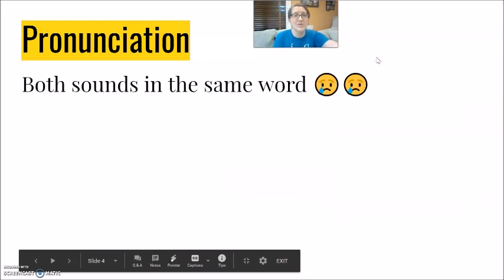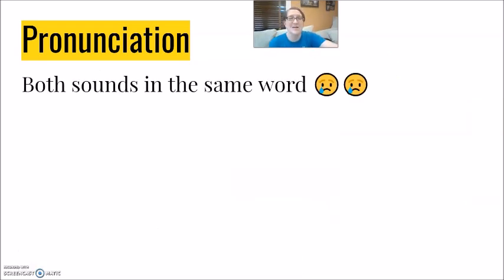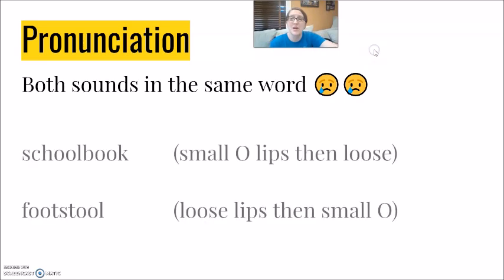It is possible to see both of these sounds in the same word, but don't cry. For example, the word schoolbook. You have a small, tight O, school, followed by a loose, wide mouth, book. Schoolbook.